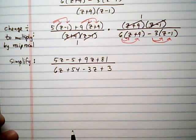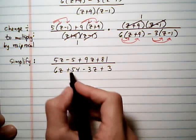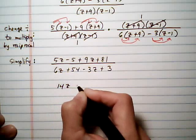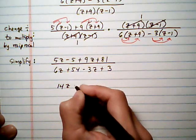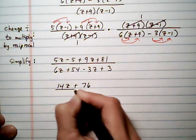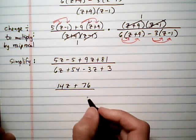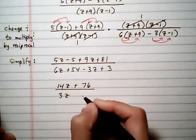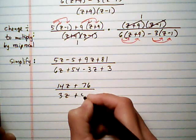So we clear parentheses, now we want to combine like terms. 5z and 9z gives us 14z. And minus 5 plus 81 is plus 76. And that's going to be divided by 6z minus 3z is 3z. 54 and 3 is 57.